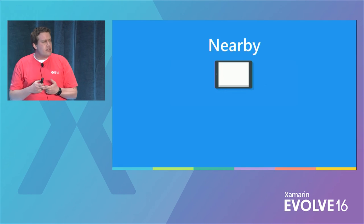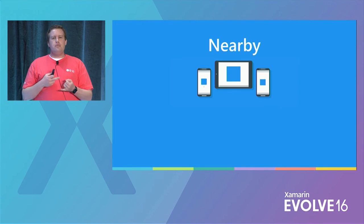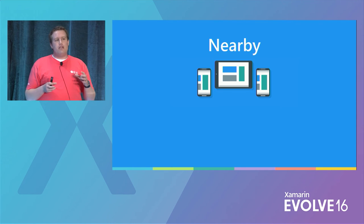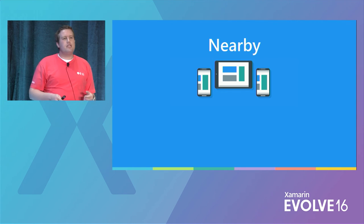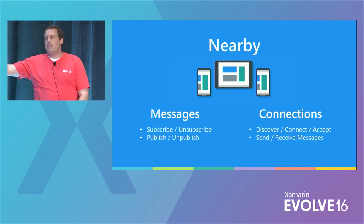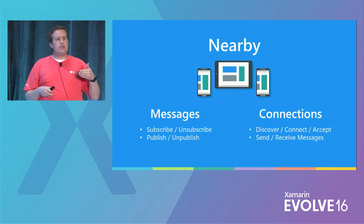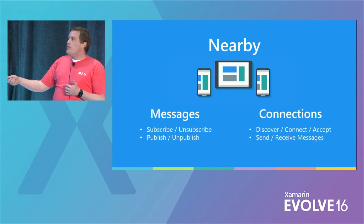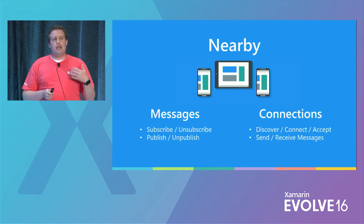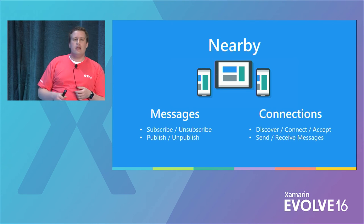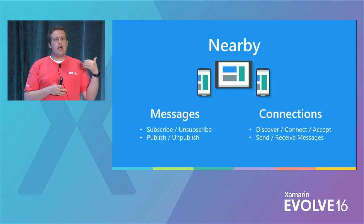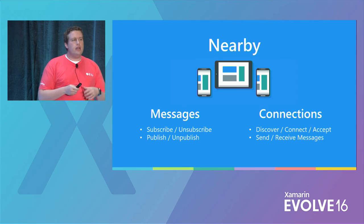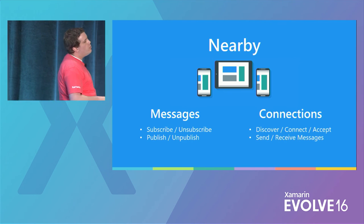The Nearby Messages API uses GPS, Bluetooth, Wi-Fi, and also audio — it may prompt for microphone permission — to figure out which devices are located nearby, cross-platform, and shares messages through Google servers. For this app I used the Messages API: you subscribe to a topic, unsubscribe, publish messages, and unpublish messages. There's also a Connections API for more detailed sessions — like playing a game with people nearby. It lets you discover and advertise sessions, send and accept invites, and once connected, send and receive messages within just that one session. It works cross-platform.